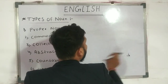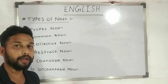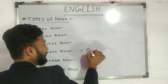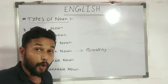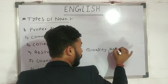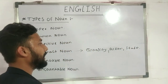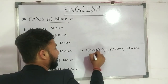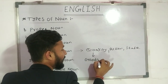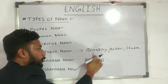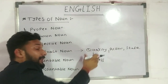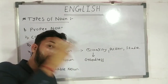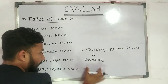The other type of noun is abstract noun. This is very important. If we talk about abstract noun, it tells us about some quality, action, or state. For example, 'goodness' — what does it represent? It is a quality. So goodness is an abstract noun. Another example is 'laughter' — laughter is a type of action. So laughter is also an abstract noun. It is a different category of noun that many people don't consider, but it is also a noun.